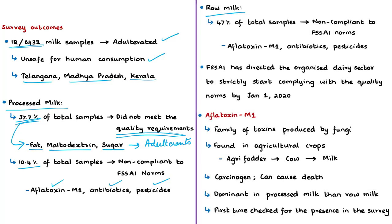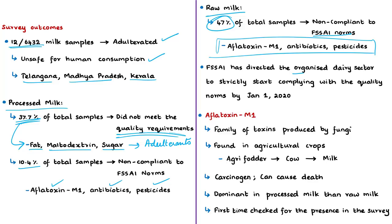In the case of raw milk, non-compliance of norms on contaminants was even higher — around 47 percent of the total raw milk samples did not comply with FSSAI norms. The CEO of FSSAI stated that the survey results prove that contaminants are more prevalent in milk than adulterants, and these contaminants may cause serious illness and sometimes even death. Based on the survey findings, FSSAI directed the organized dairy sector to strictly comply with quality norms by January 2020.